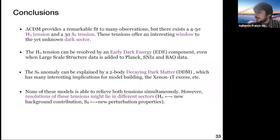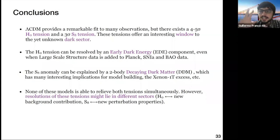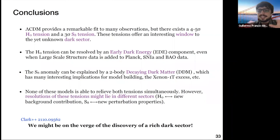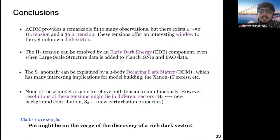One funny observation: EDE solves the Hubble tension but not S8, and decaying dark matter solves S8 but not the Hubble tension. So why not combine both? A paper appeared just last week on arXiv doing precisely that — combining the two models and claiming it works as a solution to both tensions. It may not be the most elegant approach from an Occam's razor perspective, but a priori nothing forbids the dark sector from being rich and complex, and these anomalies may be suggesting exactly that. Thank you for your attention.